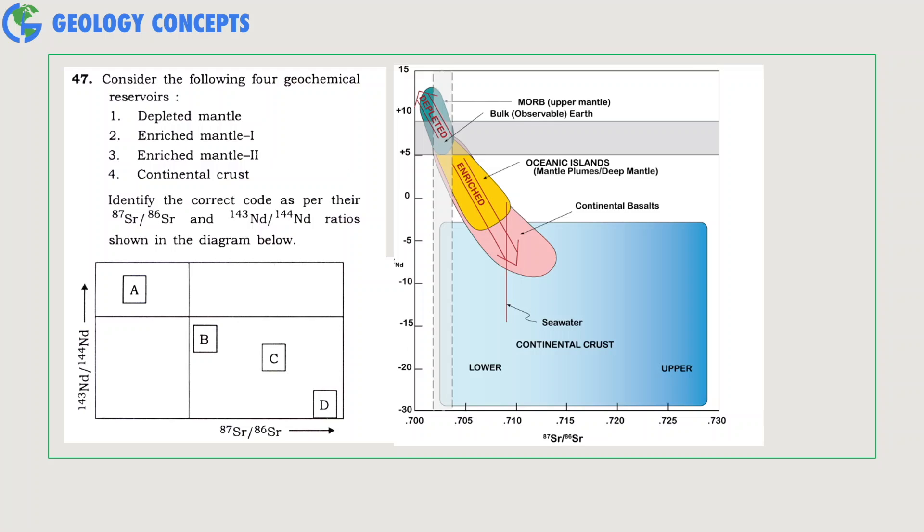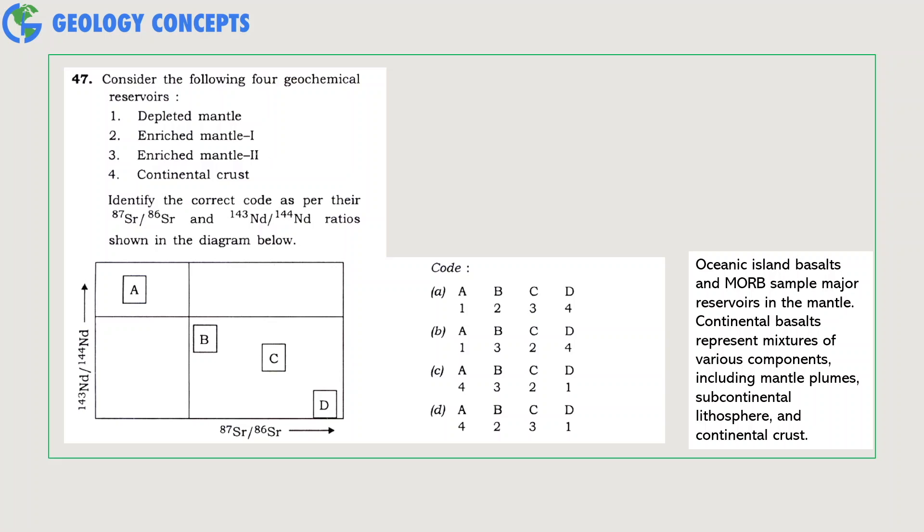Consider the following four geochemical reservoirs and identify the correct code. The question asks us to identify the following four reservoirs in a strontium and neodymium isotope ratio graph. As you can see from this diagram, the depleted reservoir is represented with a high neodymium and lower strontium ratio. More to the right is the depleted reservoir, so A represents a depleted reservoir. Now, continental crust has a high strontium and low neodymium ratio, and D represents this pattern of continental crust. OIBs represent enriched mantle, so B is enriched mantle as they represent mixtures of various components including mantle plumes, subcontinental lithosphere, and continental crust. So option A will be the correct match.